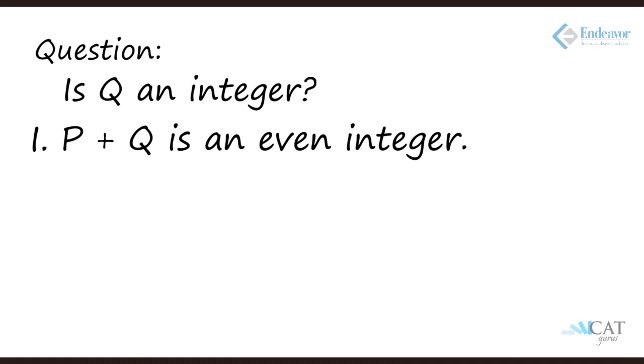First statement: p plus q is an even integer. Odd plus odd is even, even plus even is even. So p and q both can be odd and p and q both can be even. But can p and q be 1.5 plus 2.5? Yes that is possible. Because 1.5 and 1.5 will give me 3 which is not even, but 1.5 and 2.5 will give me 4. 1.2 and 2.8 will also give me 4. So p and q need not be necessarily integers.